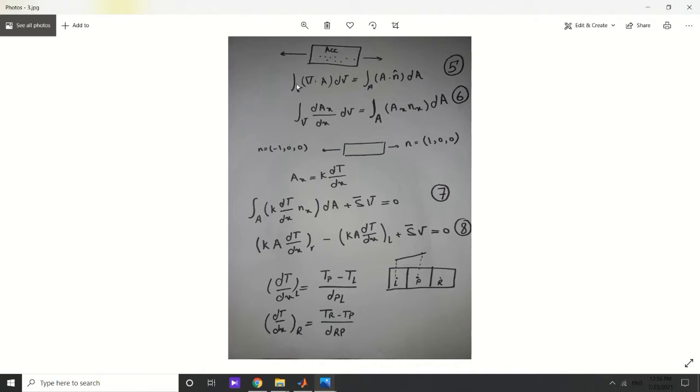Since we are dealing with a one-dimensional problem, we have only two boundaries at the left and right hand side. If we want to write the divergence theorem mathematically, we can write it like the fifth equation. n is actually the normal vector to the surface.